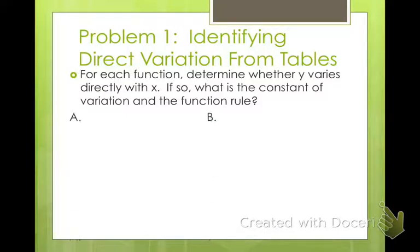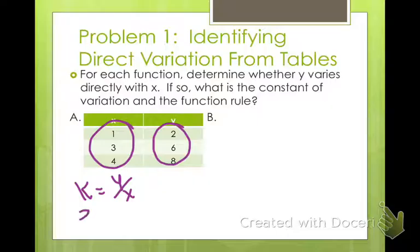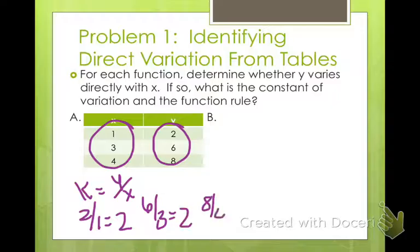So first we're going to look at a table, and what we do for a table, since our constant equals y over x, we're just going to take our y values and then divide by our x values, and if they're all the same, then it is constant. So 2 divided by 1 is 2, 6 divided by 3 is 2, and 8 divided by 4 is 2. Since the constant is same in all of them, then this is a direct variation.